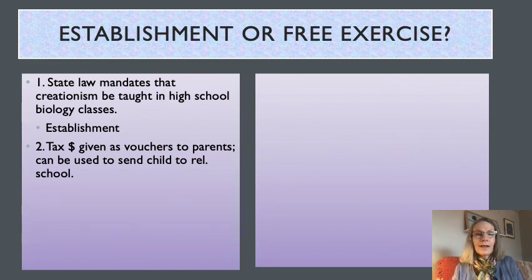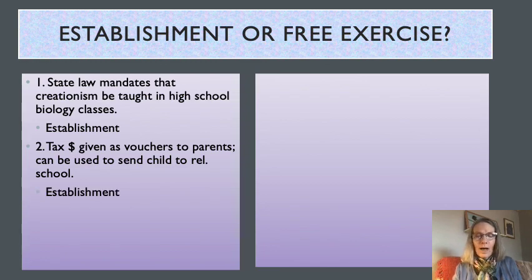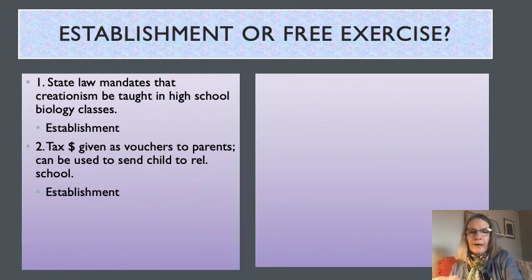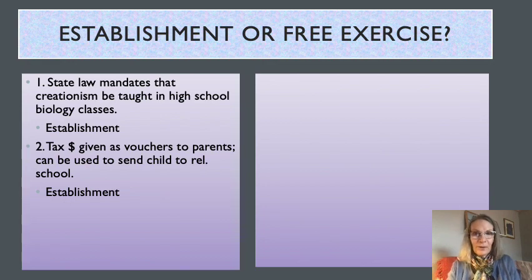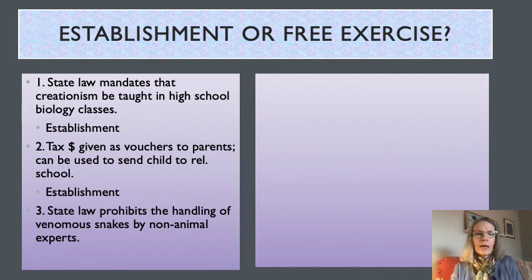Number two — tax dollars given as vouchers to parents to send their child to a religious school — is also an Establishment Clause case, because public tax dollars are being funneled to pay for tuition at a religious school. In a way, it's the intermingling of church and state. Now, it is going through parents, so one might say it's the parent making the decision, not the state intermingling with the church. We'll read the case that deals with whether vouchers sent to religious schools violates the Establishment Clause.